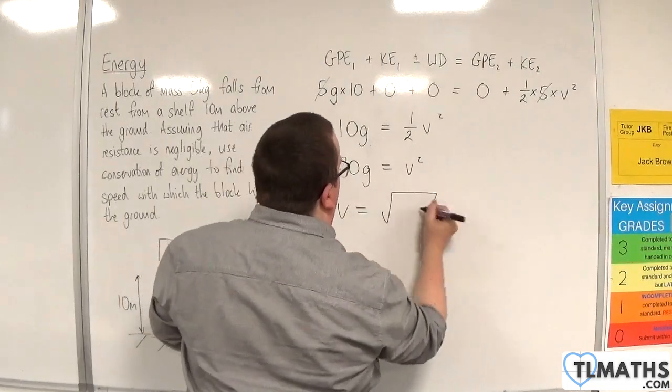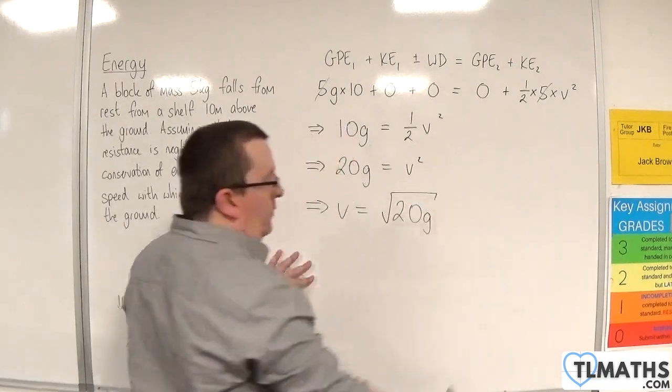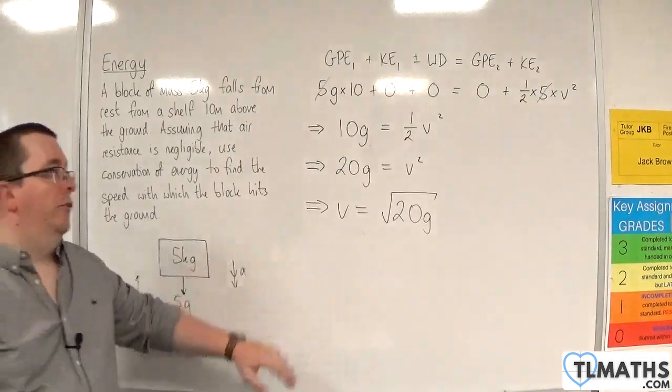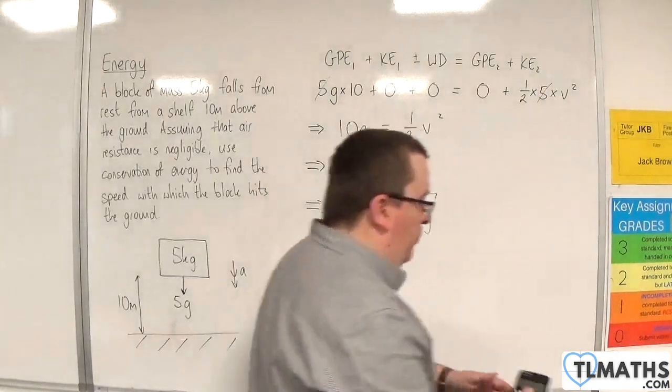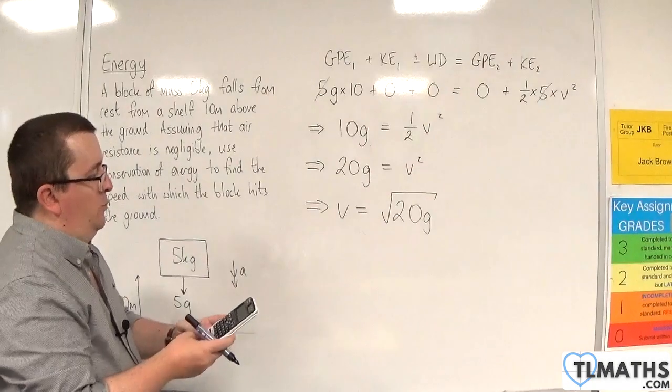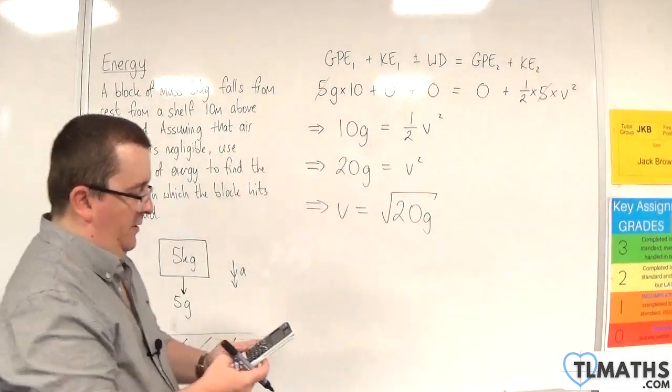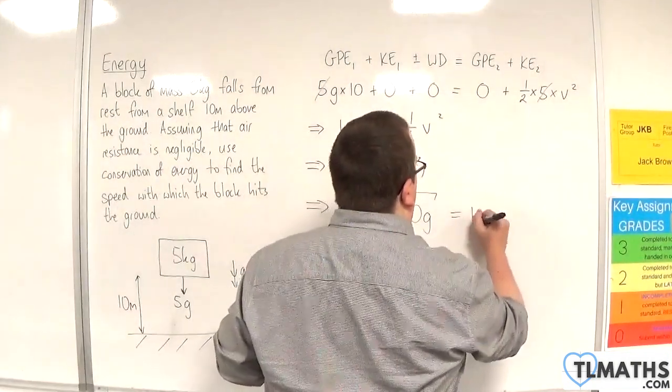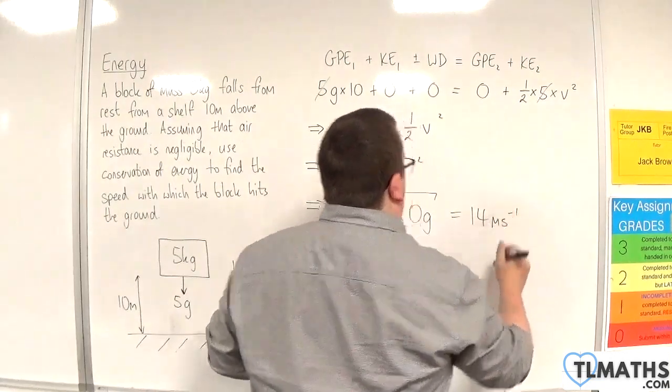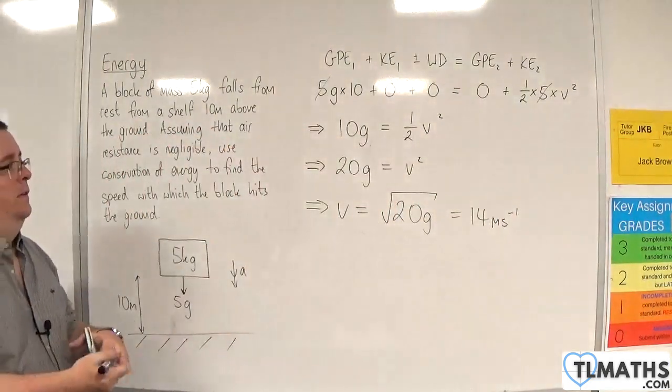So V will be the square root of 20G. Now, of course, if we put in G as 9.8, we get square root of 20 times 9.8, which is equal to 14 metres per second.